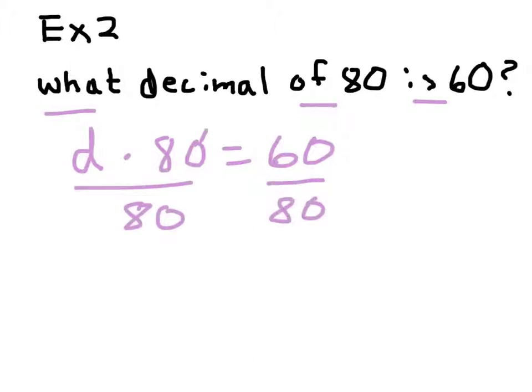Here, they want a decimal. So we can take a calculator and divide 60 by 80. Or divide by 10: 6 divided by 8. I can divide both in half, and I know that three-fourths is 0.75. So 0.75 of 80 is 60. If I represent that as a percent, is 75% of 80 about 60? That makes sense.